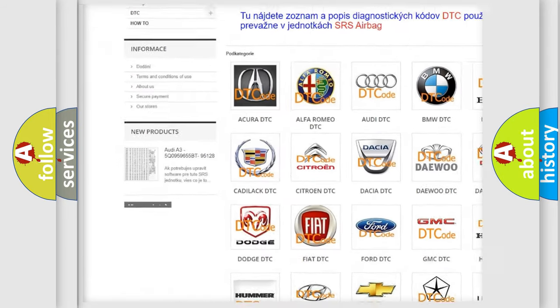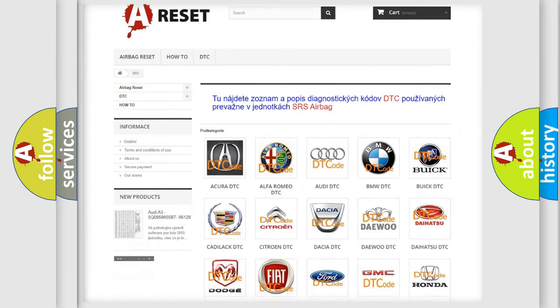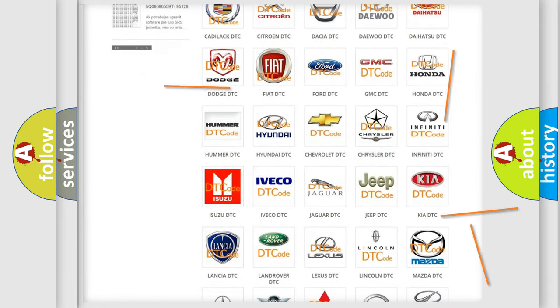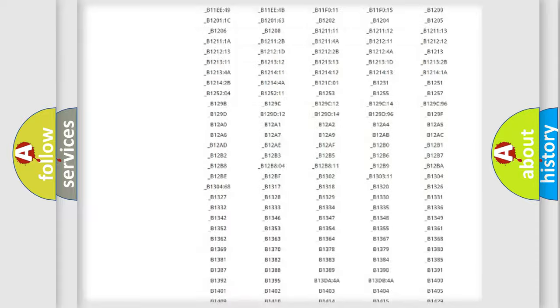Our website airbagreset.sk produces useful videos for you. You do not have to go through the OBD2 protocol anymore to know how to troubleshoot any car breakdown. You will find all the diagnostic codes that can be diagnosed in Jeep vehicles.